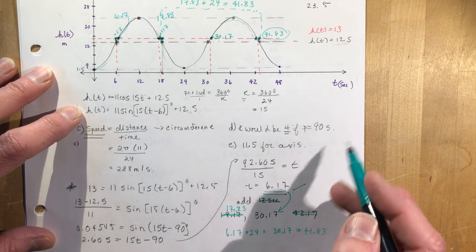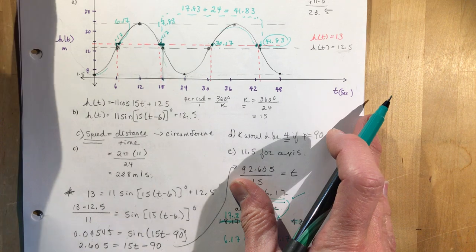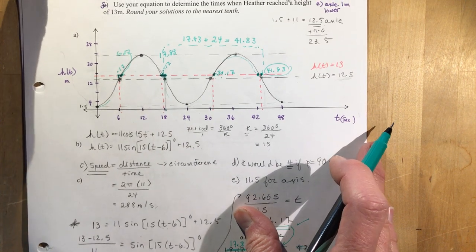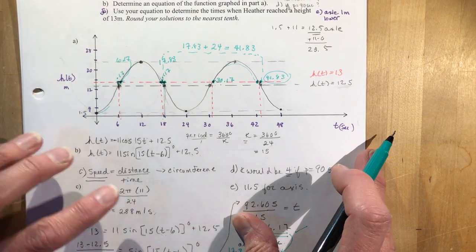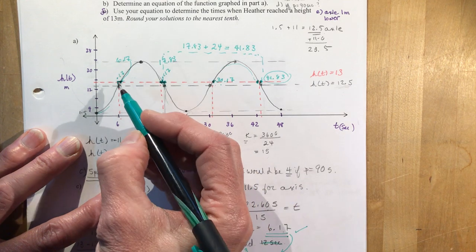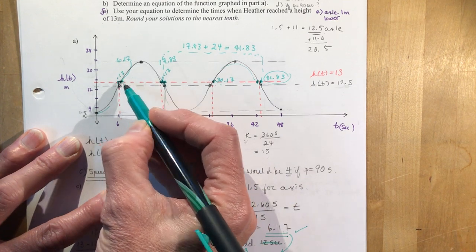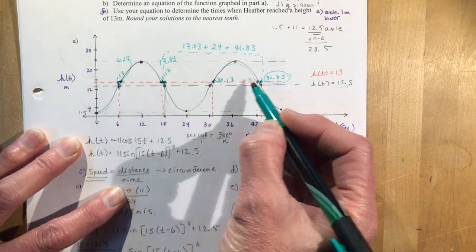Now for the other places, if you look at the graph, you can see that she's going to reach this height four times. That's here, here, here, and here.